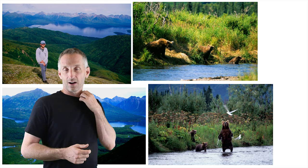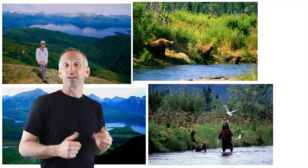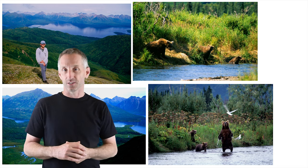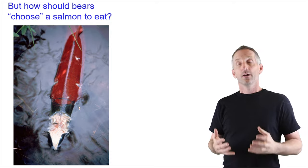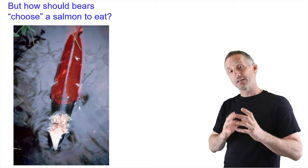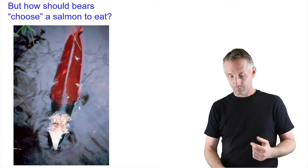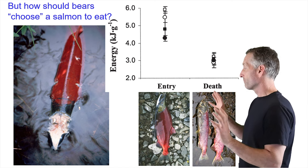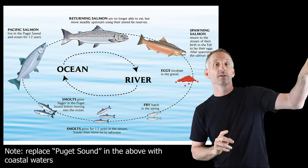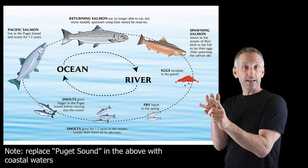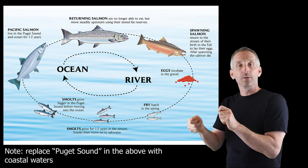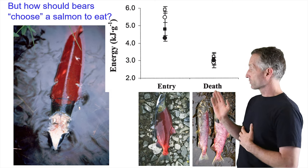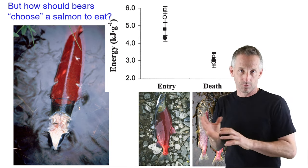When bears are confronted by all these salmon in the stream, they have to make a decision on what to eat — they don't just eat at random. Different salmon in the creek will have different energy rewards for bears. When salmon first enter the creek, they gain their energy in the ocean, then come back into fresh water during which they stop feeding, and do all their reproduction based on stored energy while spawning — using up that energy over about three weeks until they all die.